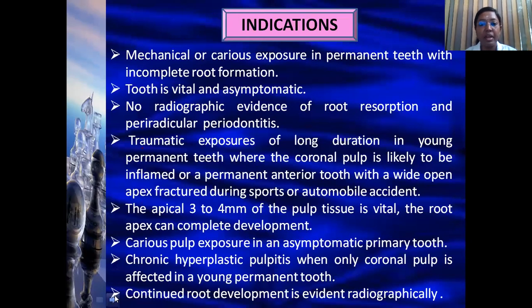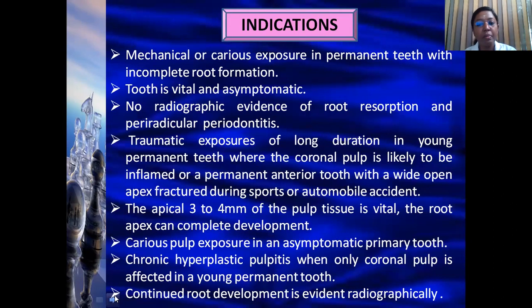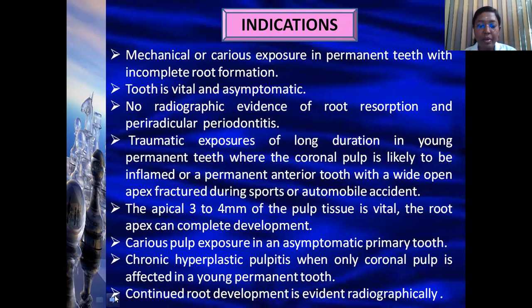Indications for pulpotomy include: mechanical or carious exposure in a permanent tooth with incomplete root formation; an asymptomatic vital tooth with no radiographic evidence of root resorption or periradicular periodontitis; traumatic exposure of long duration especially in young permanent teeth where the coronal pulp may be inflamed; permanent anterior teeth with a wide open apex that sustained a fracture during trauma where the apical 3–4 mm of pulp tissue is vital; carious exposure in an asymptomatic primary tooth; chronic hypoplastic pulpitis (pulp polyp) in a young permanent tooth where continued root development is evident radiographically.